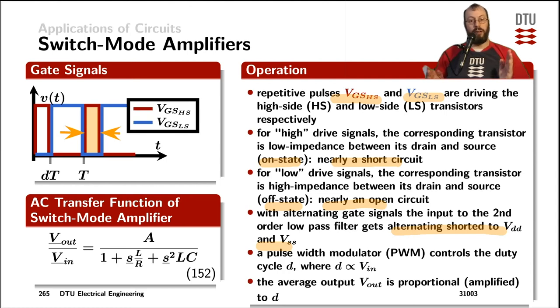The duty cycle is varying all the time during the operation following the input signal. So if the input signal is falling, the duty cycle is getting less. And if the input signal is rising, the duty cycle is rising as well.